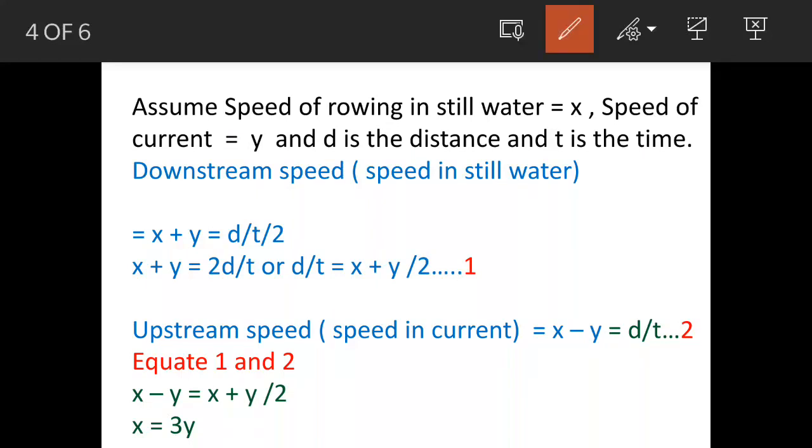Let's assume that the speed of rowing in still water is x, speed of current is y, d is the distance, and t is the time.